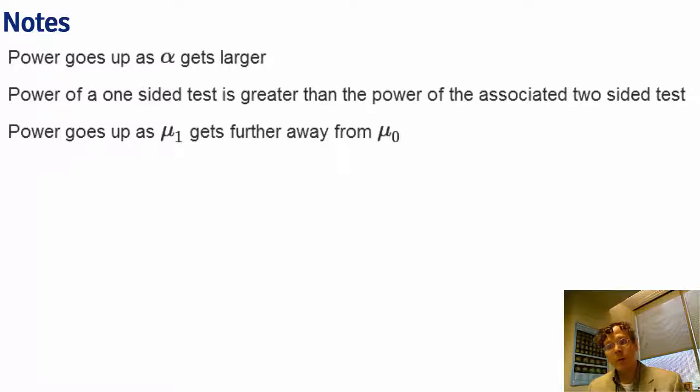The further mu_a gets from mu naught, the higher the power is. As n goes up, the sample mean has less variability, and so we have higher power. As sigma goes down, our sample mean has less variability, and so we're going to have higher power.